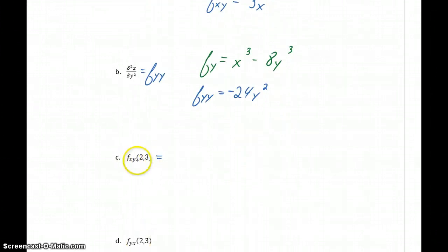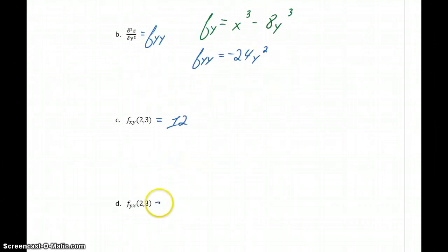So now all we want to do in part c and d is take the given values for x and y, substitute those into the functions, and come up with the results. In this case, we come up with 12 and 12 for each one.